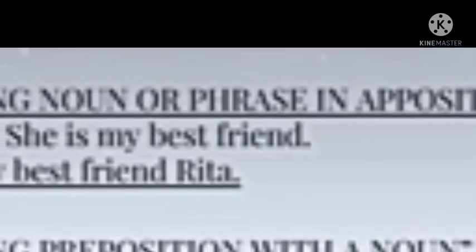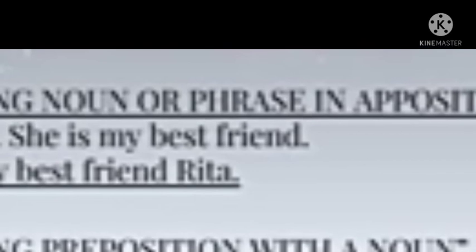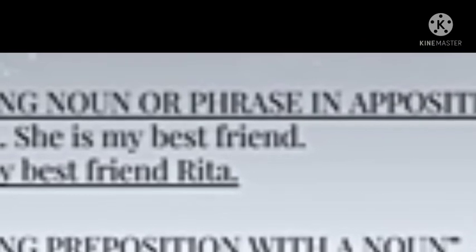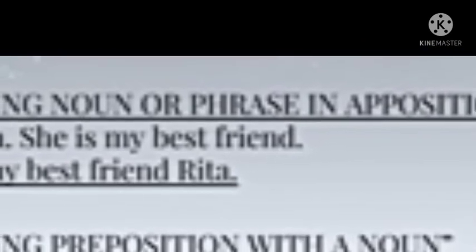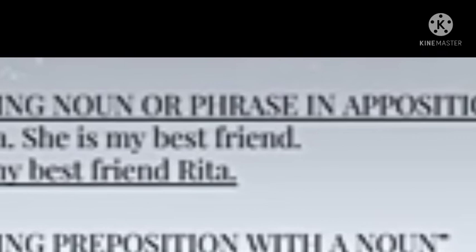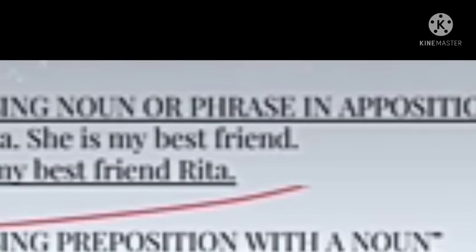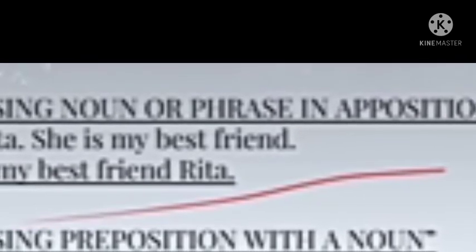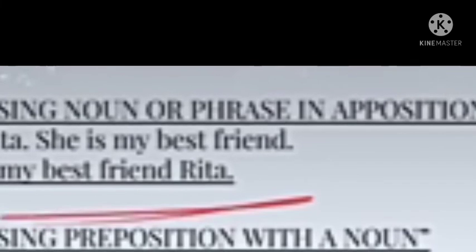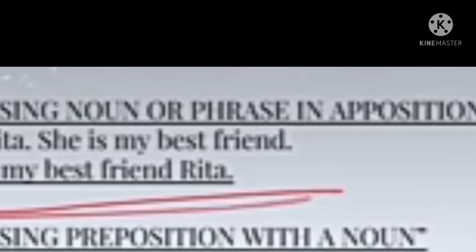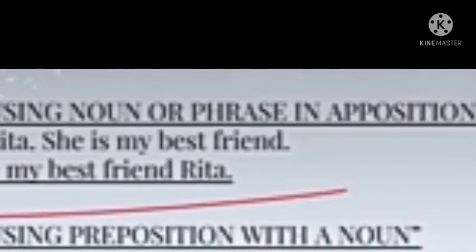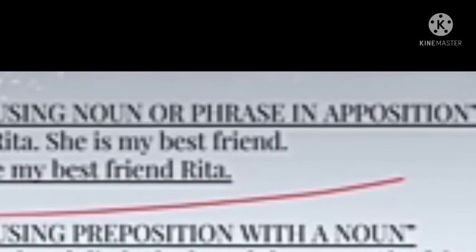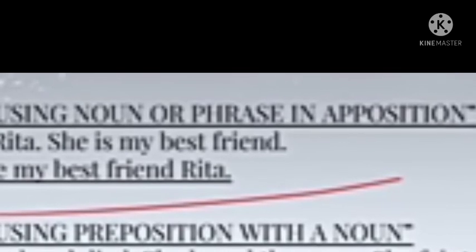The second method is by using a noun or phrase in apposition. Apposition means placing before. For example: 'I love Rita. She is my best friend.' Combined: 'I love my best friend, Rita.' So Rita is identified as your best friend within the single sentence.